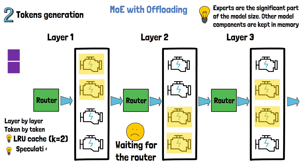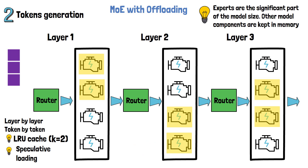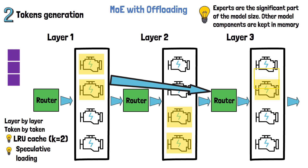The second method is called speculative experts loading. When proceeding to generate the third token, while waiting for the results of layer 2, we can try to guess which experts will be needed in layer 3 by feeding the results from layer 1 directly to the router of layer 3. If the guess is that the activated experts will be the first two, we begin loading the first expert in parallel while layer 2 is still running. When we have the results of layer 2, we still pass them via the router, and if the guess was wrong we fix and load the real activated experts.